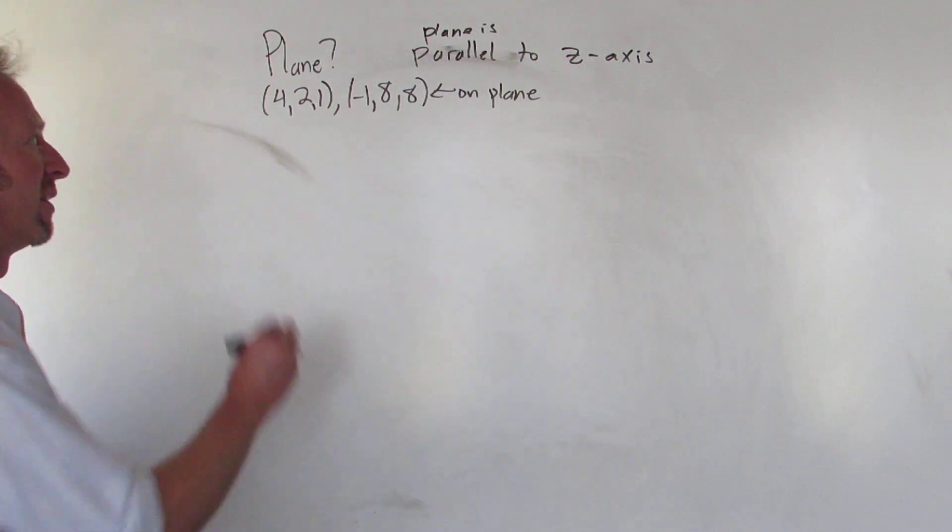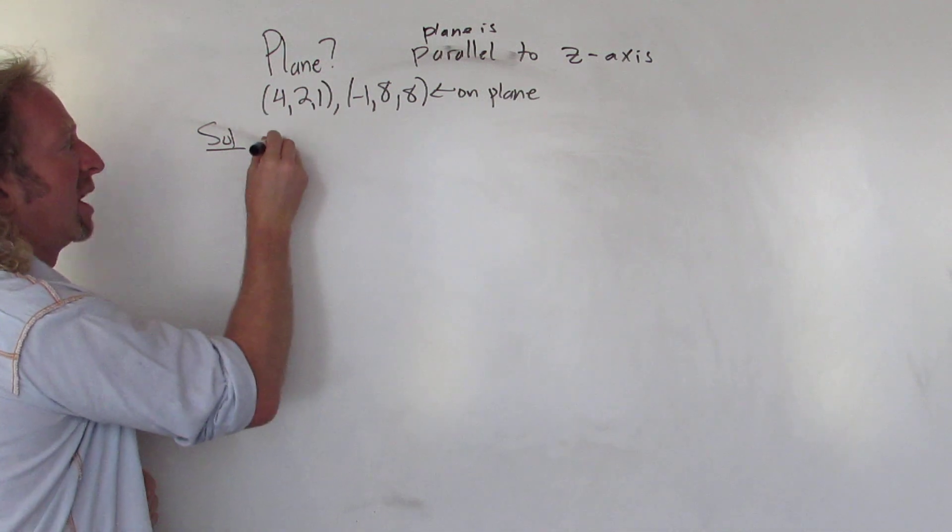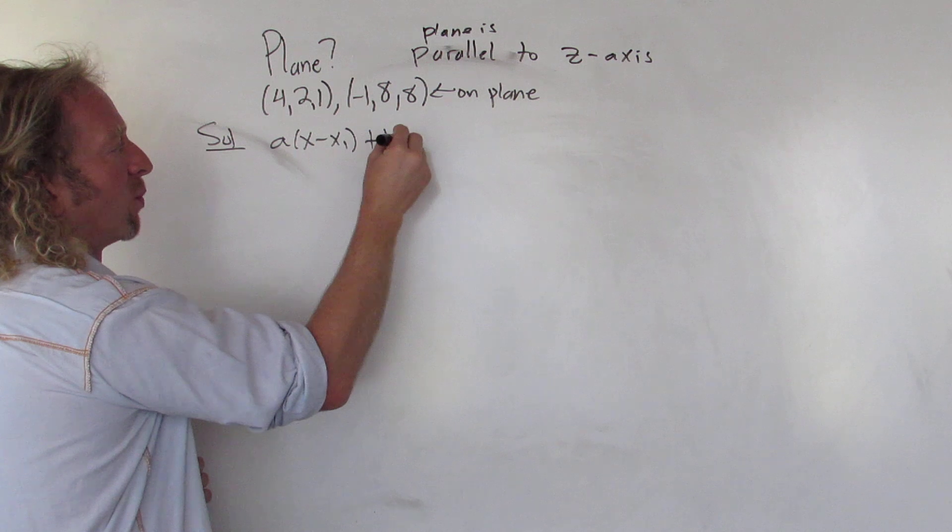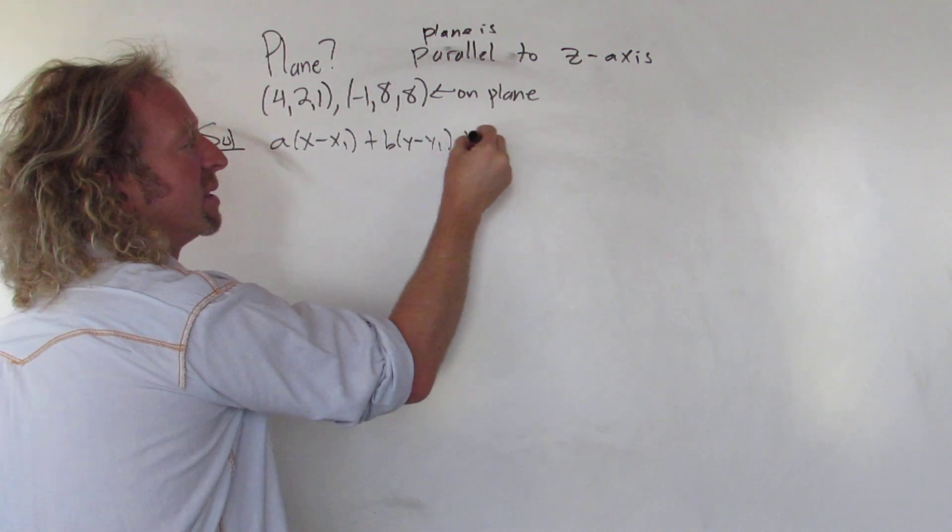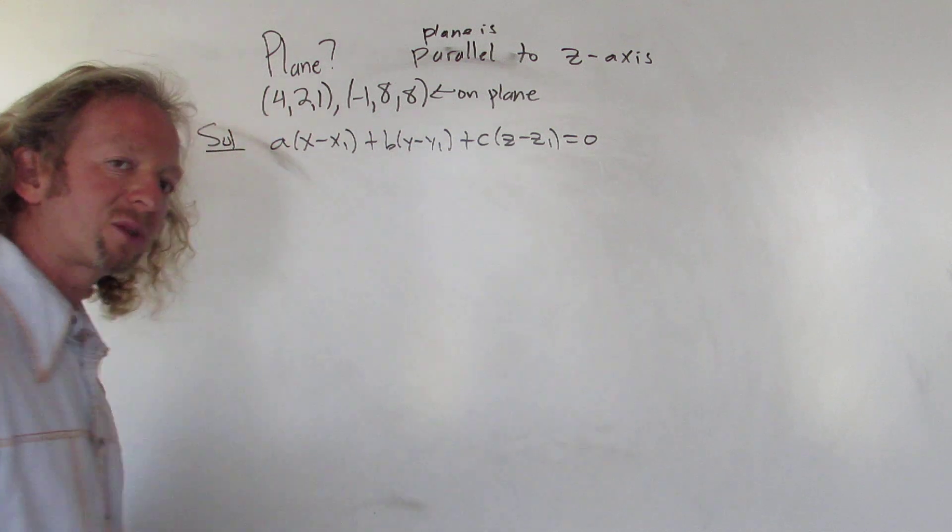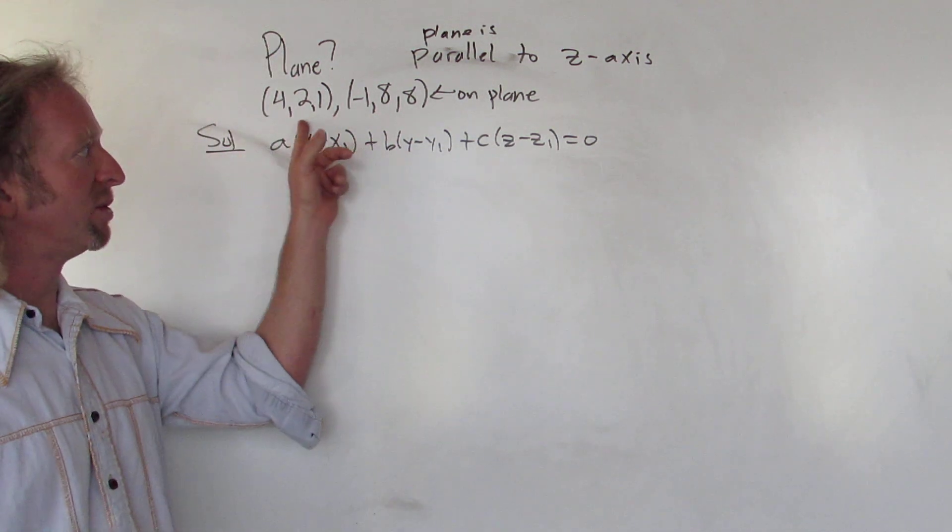Before we do anything I'm going to write down the formula for the equation of a plane. The formula for the equation of a plane is a times (x - x1) plus b times (y - y1) plus c times (z - z1) equals 0. And all of this x1, y1, z1 is an ordered triple. It's a point in space and so we can use any of these.